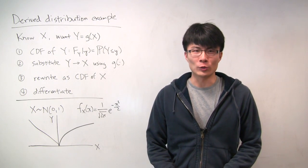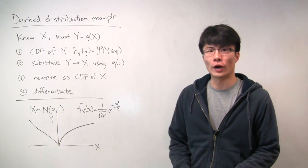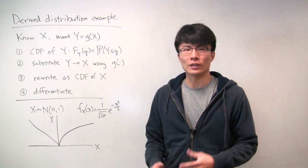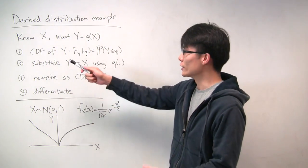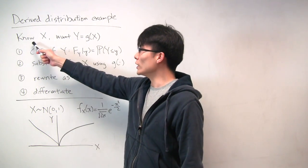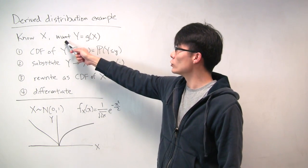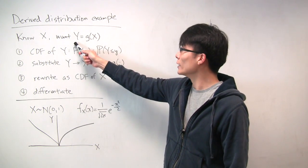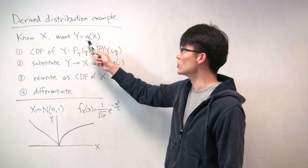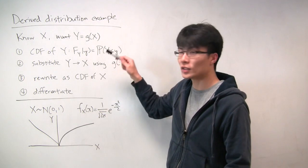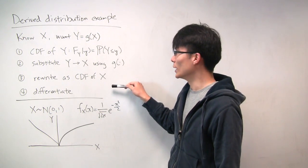In this problem, we'll work through an example of calculating a distribution for a random variable using the method of derived distributions. In general, the process goes as follows. We know the distribution for some random variable x, and what we want is the distribution for another random variable y, which is somehow related to x through some function g. So y is some g of x. We can summarize the steps using these four steps.